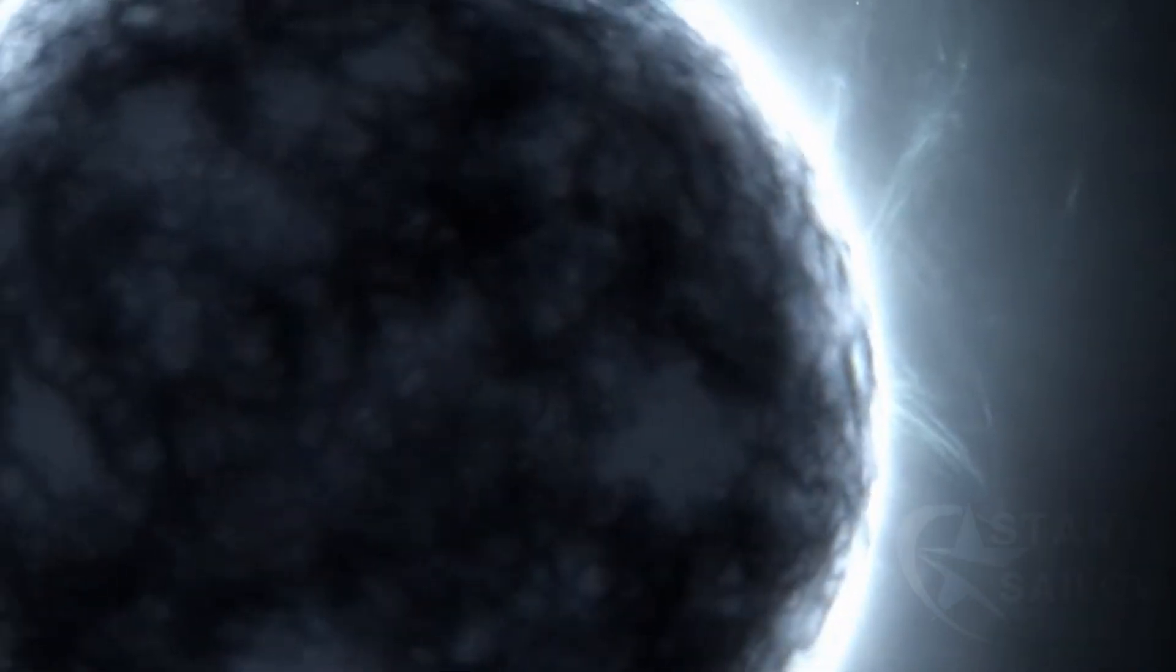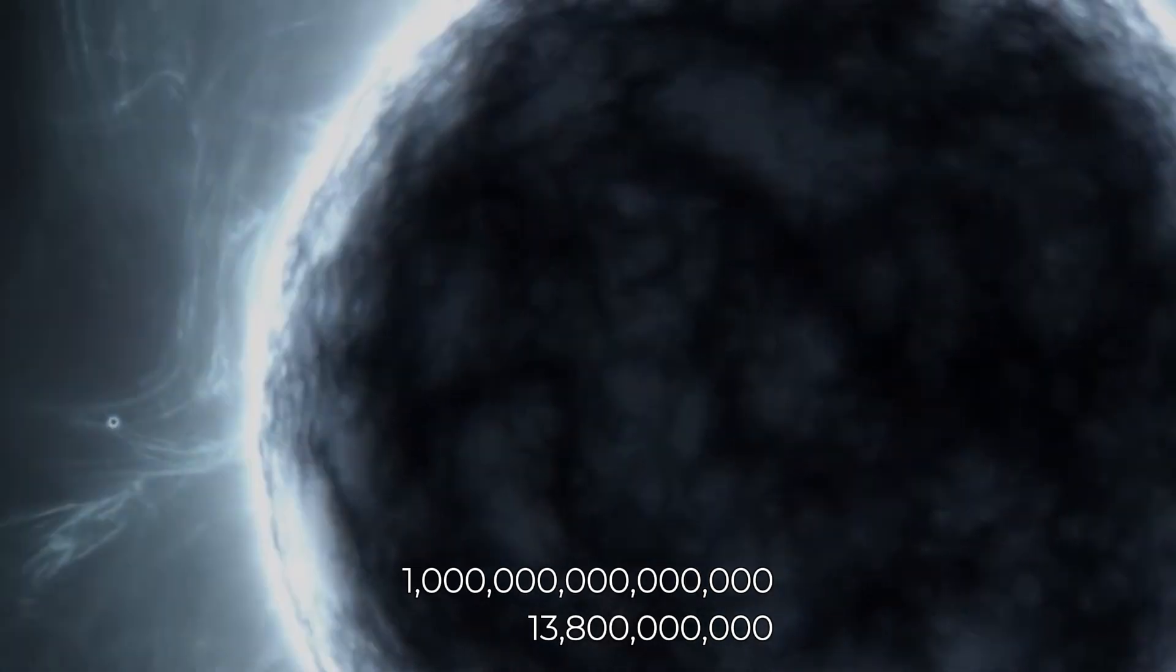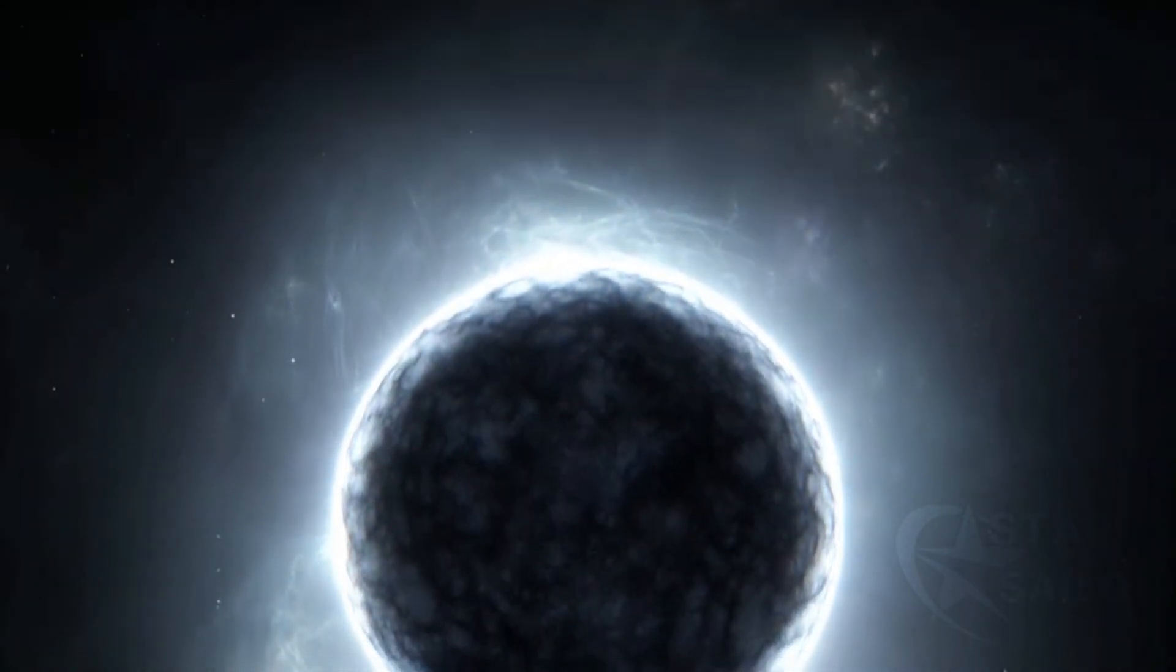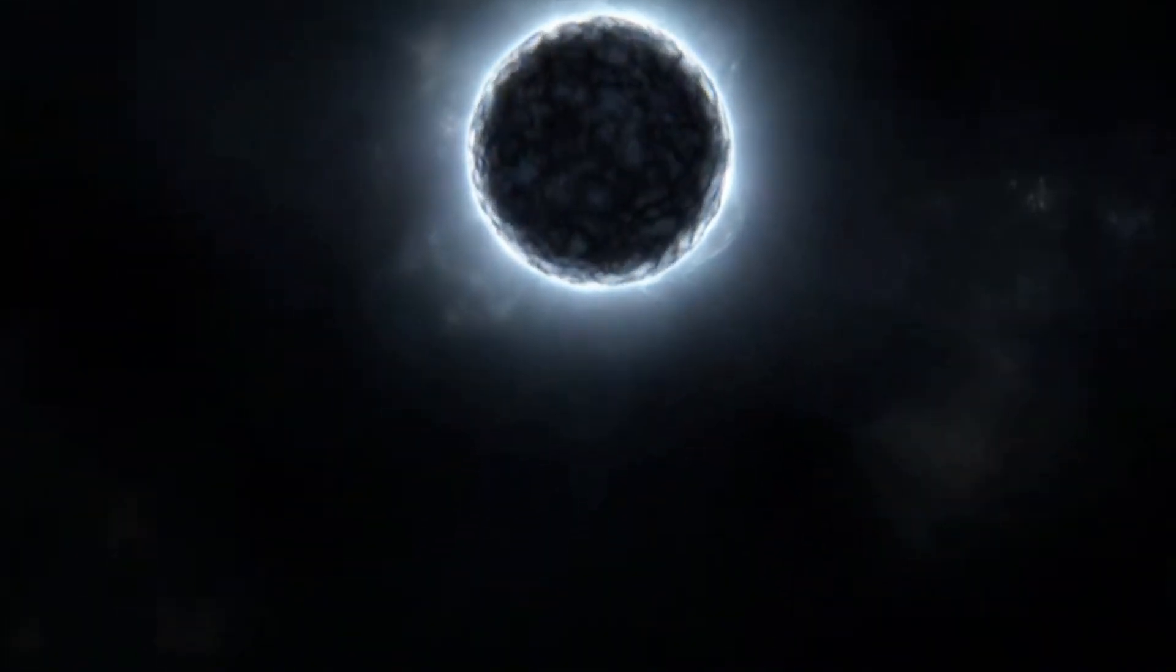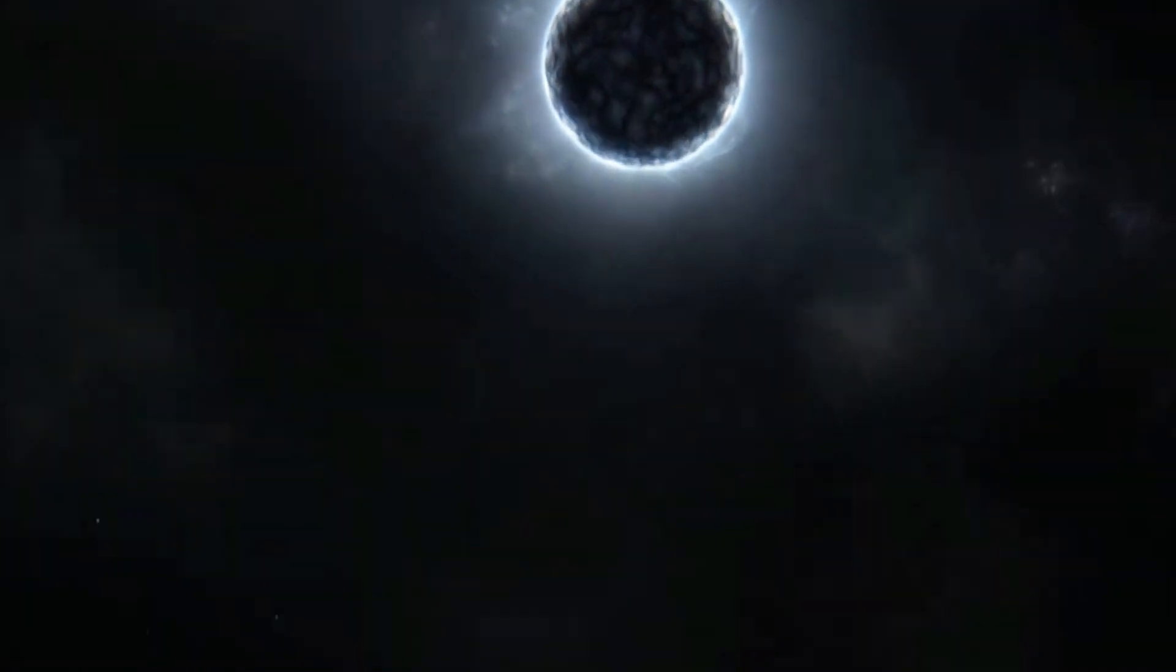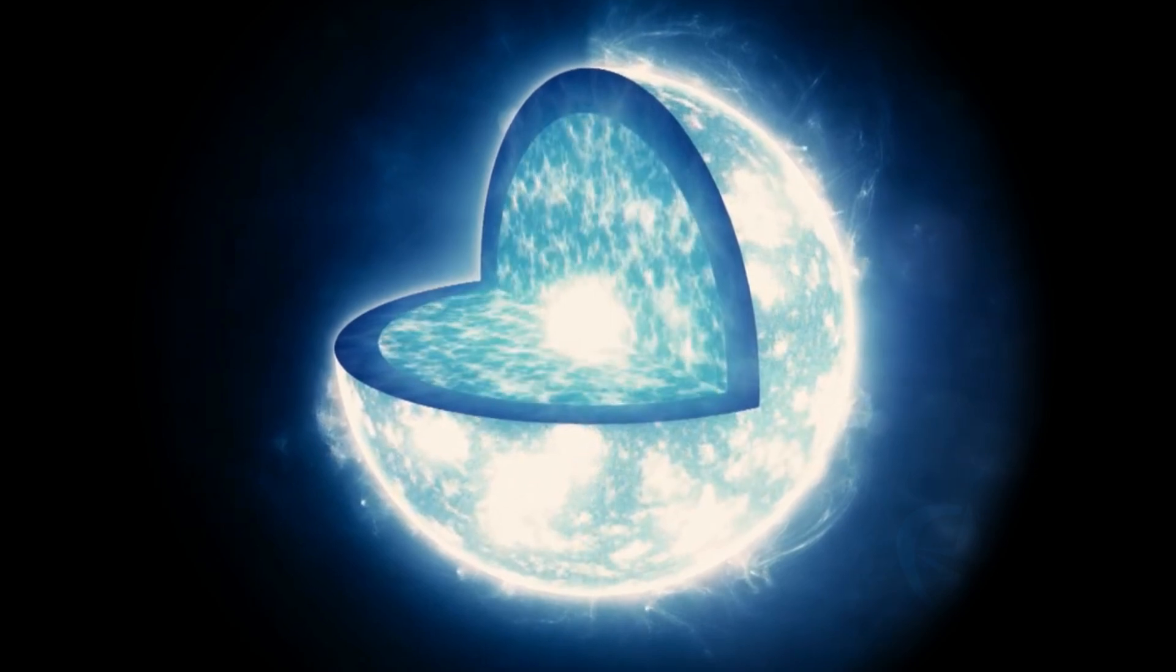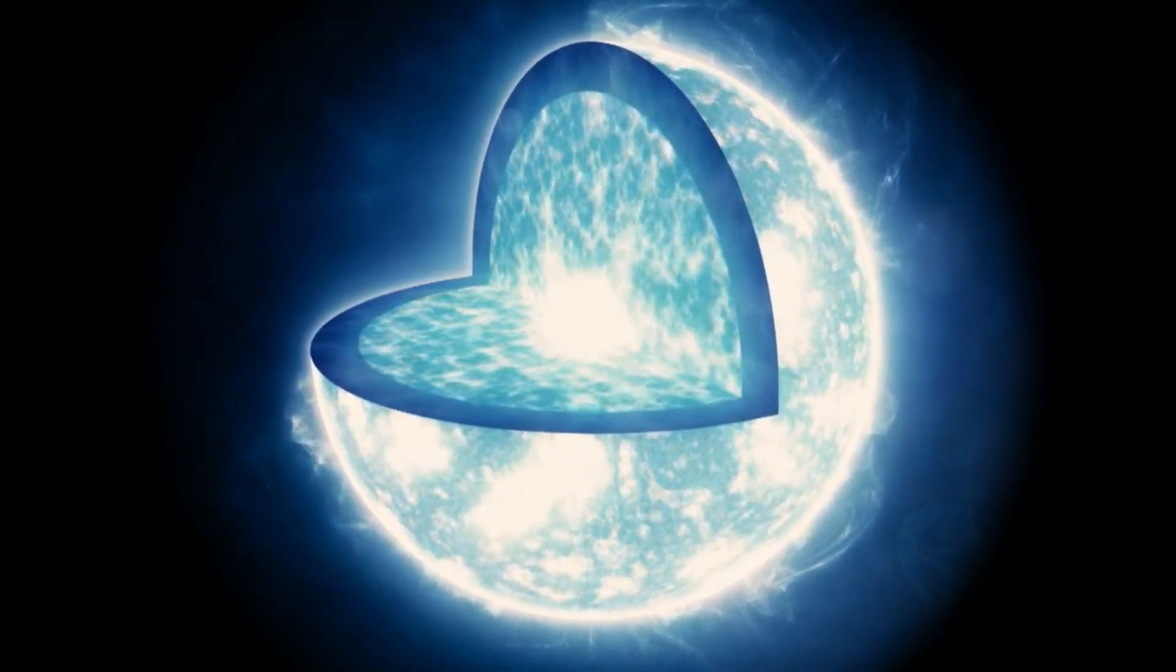Scientists estimate it would take approximately one quadrillion years, far longer than the current age of the universe, for a white dwarf to cool sufficiently to reach this phase. No black dwarf has been observed so far, and it is unlikely that one will be discovered in the foreseeable future. However, astronomers have detected signs of crystallization in the cores of existing white dwarfs, offering a glimpse into this eventual transformation.